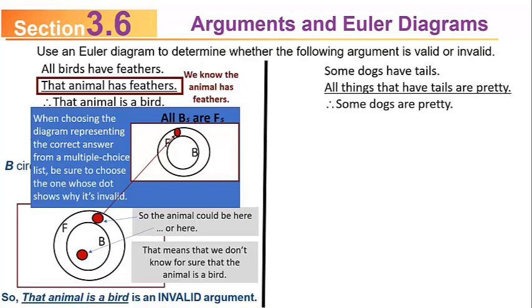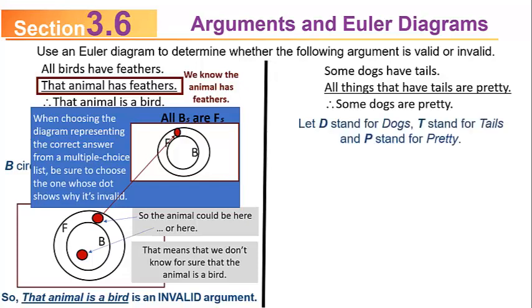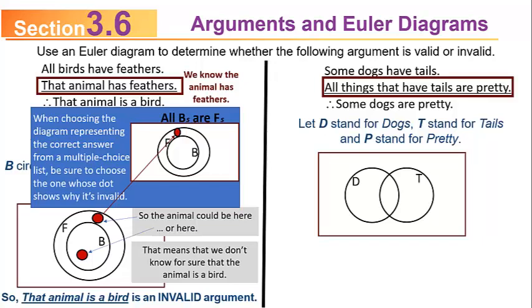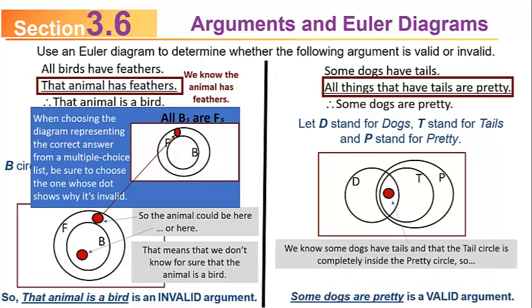Consider: some dogs have tails; all things that have tails are pretty; therefore, some dogs are pretty. Let D stand for dogs, T for tails, and P for pretty. Because some dogs have tails, draw overlapping D and T circles. Because all things with tails are pretty, the T circle must be completely inside the P circle. Since some dogs are in the tail circle and the tail circle is fully inside the pretty circle, some dogs are pretty — a valid argument.